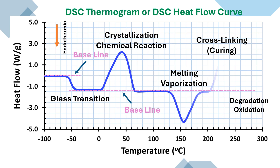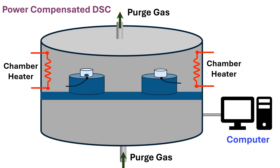Finally, both types of DSC give heat flow as a function of temperature or time. In my next video I will explain the heat flow curve and how to identify different events in the sample during the process of heating or cooling.